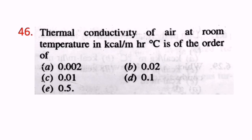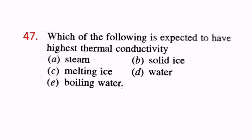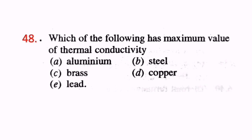Question 46: Thermal conductivity of air at room temperature in kilocalories per meter hour degree Celsius is of the order of 0.02. Question 47: Which of the following is expected to have the highest thermal conductivity? That is solid ice, which has more thermal conductivity than the other given options. Question 48: Which of the following has the maximum value of thermal conductivity? That is aluminum, when compared with steel, brass, copper and lead.